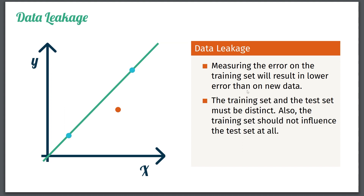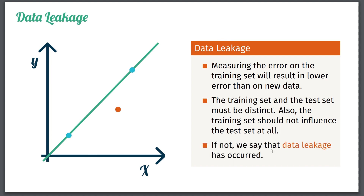To get a good approximation of the actual error, the training set and the test set need to be distinct. The training set should not influence the test set in any way, shape, or form. If it does, we call that data leakage.